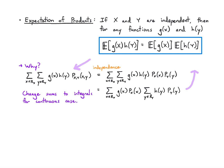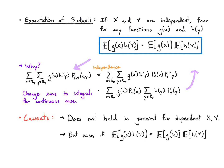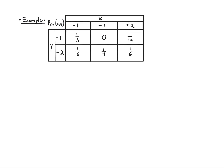The caveats are that this doesn't work in general if you have dependent X and Y. It might work — you might find a specific example where it does work — but there's no guarantee, and that doesn't mean the variables are independent. They could still be dependent.